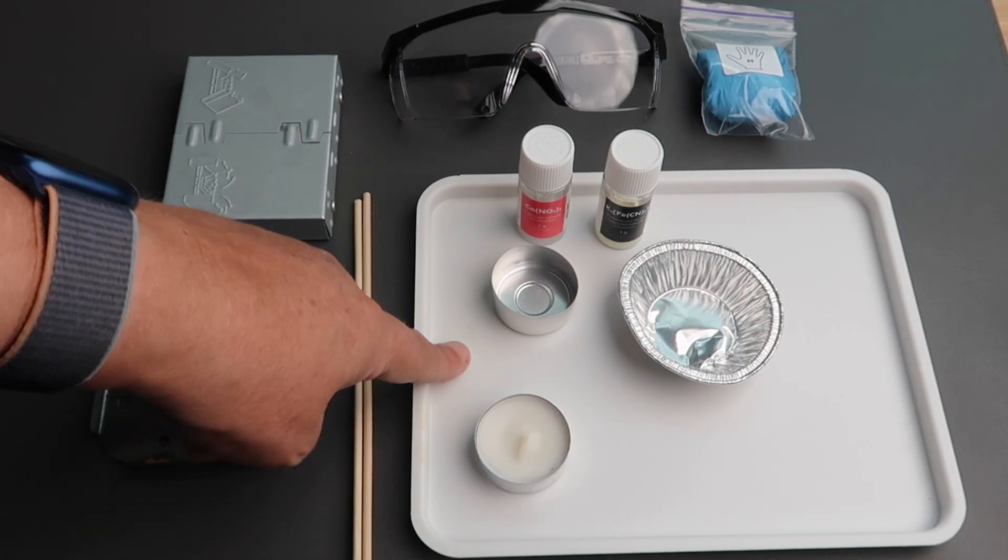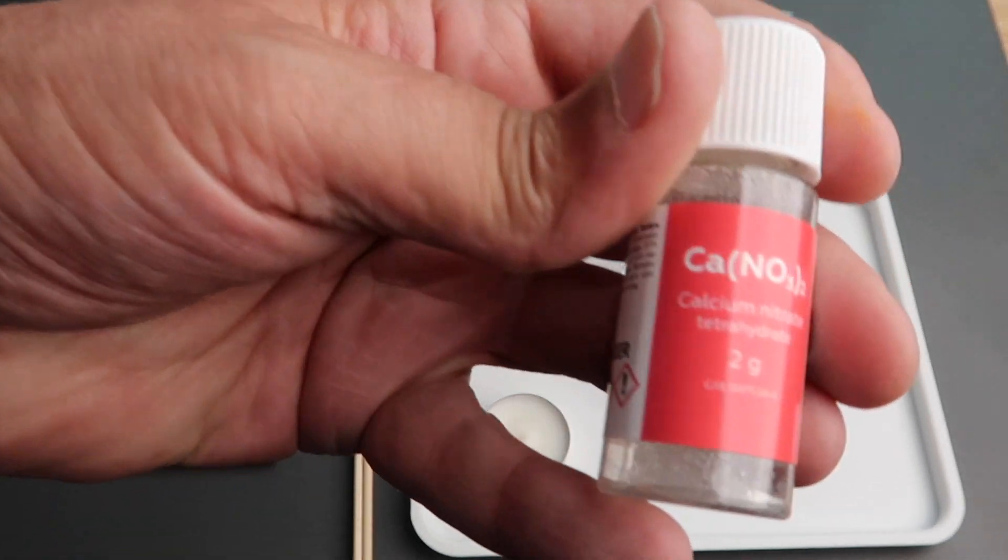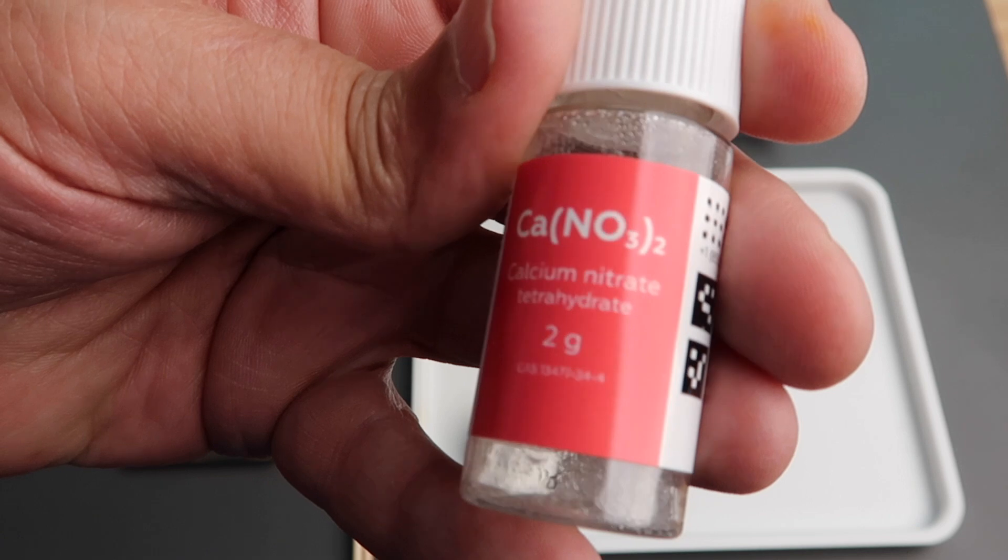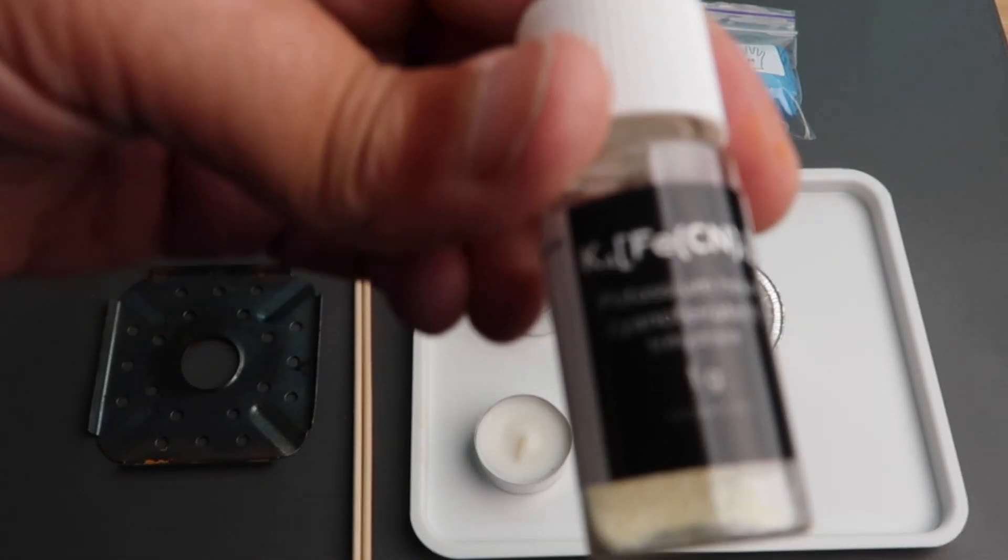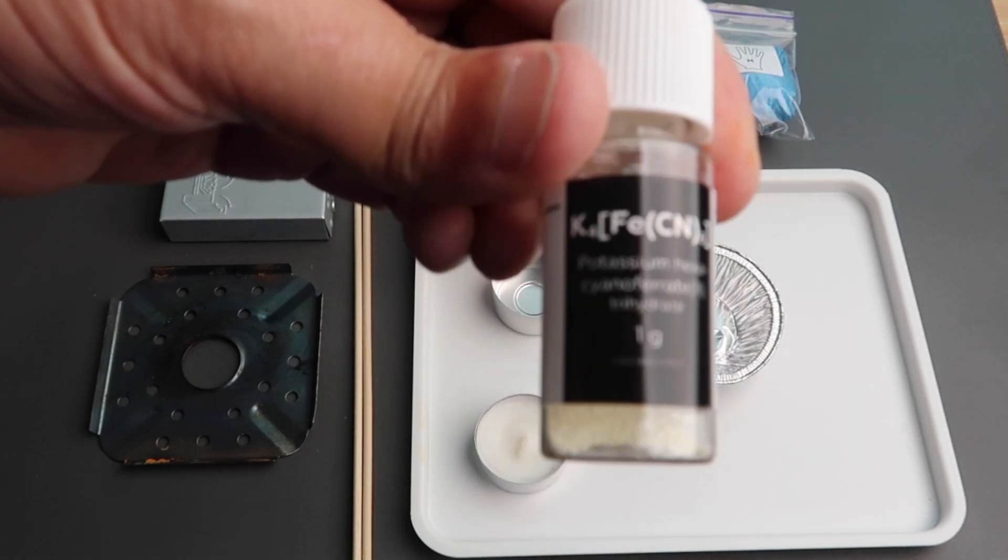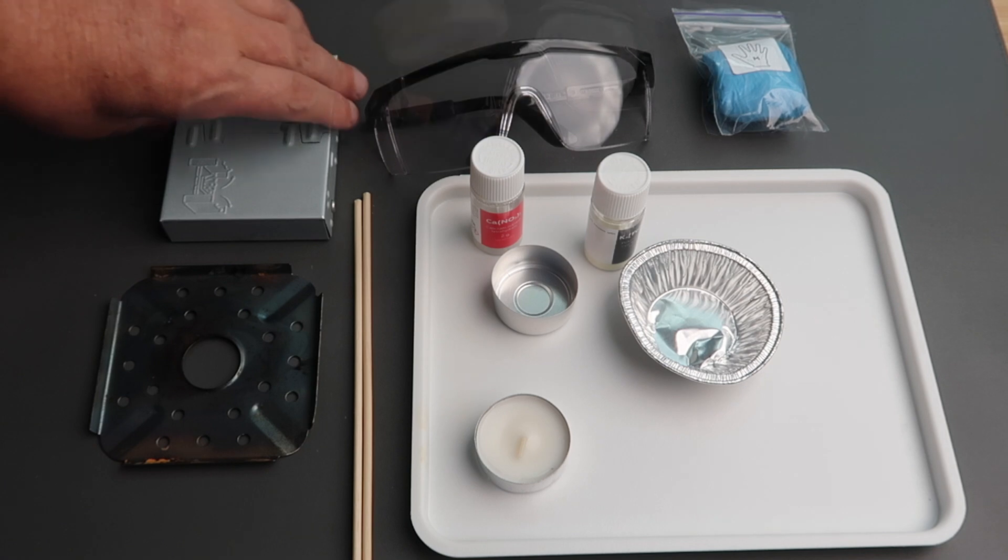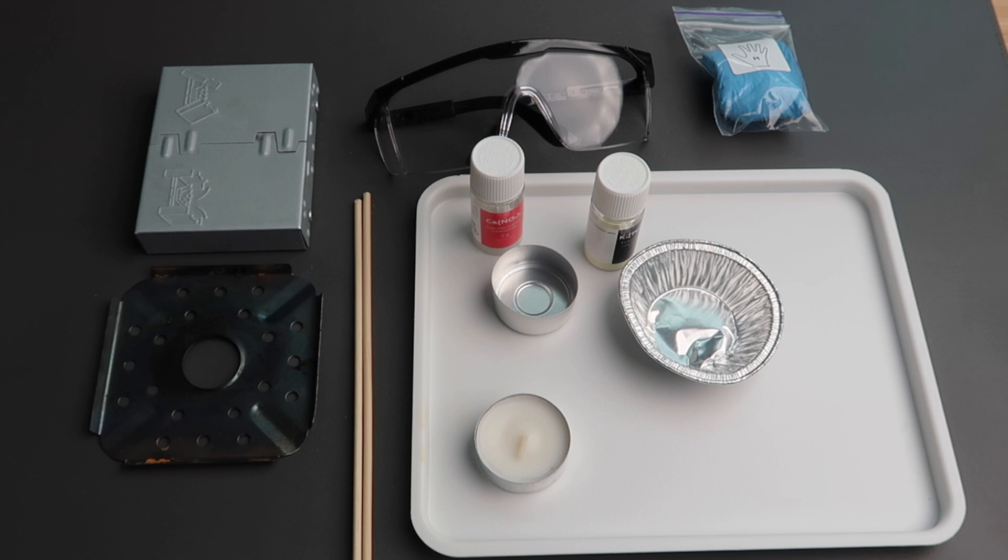First we're going to make some solid fuel and then ignite it. This is composed of two chemicals, calcium nitrate tetrahydrate and potassium hexacyanoferrite. To prepare the fuel, we're going to use the burner that comes with the basic lab kit.